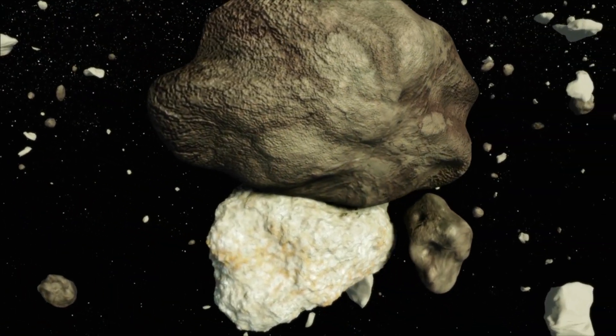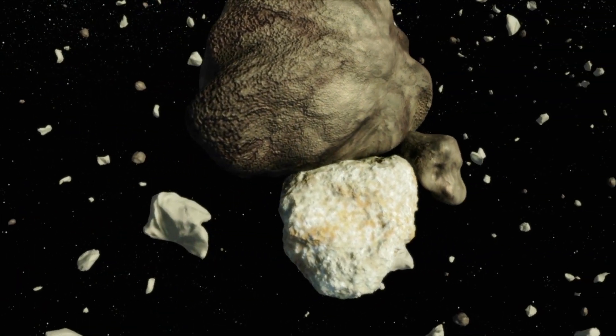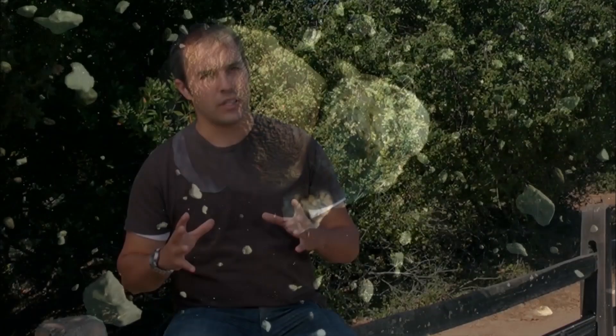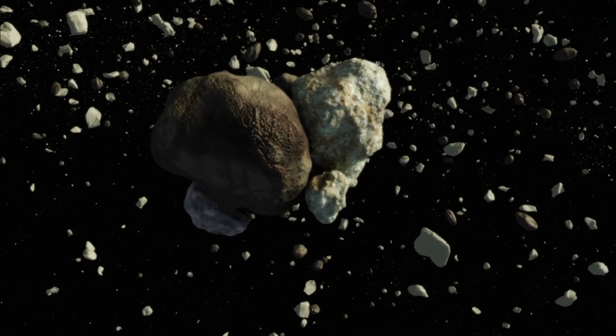Eventually, they become planetesimals. Planetesimals were the original building blocks of our solar system. They're incredibly small, only about half a mile to a mile across, but there were countless numbers in the early solar system. It was simply littered with them.